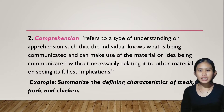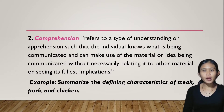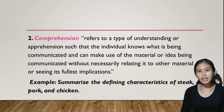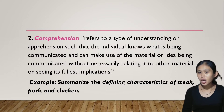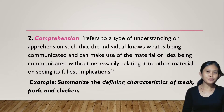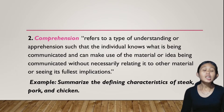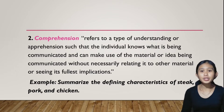Number two: comprehension. It refers to a type of understanding or apprehension such that the individual knows what is being communicated and can make use of the material or idea being communicated without necessarily relating it to other material or seeing its fullest implications. For example, summarize the defining characteristics of steak, pork, and chicken. Comprehension assesses the ability of the learner to understand the meaning of what is known.